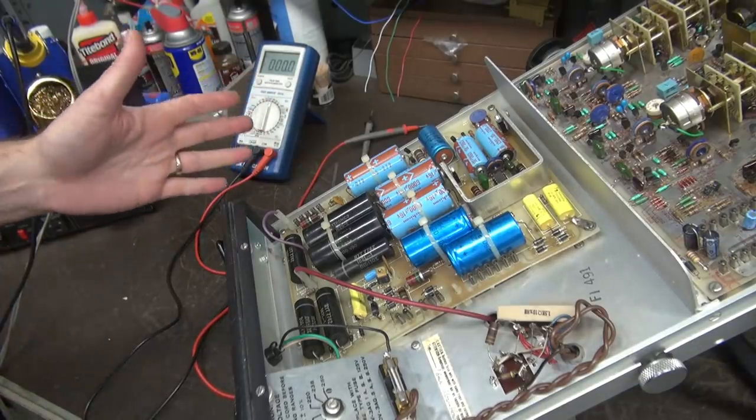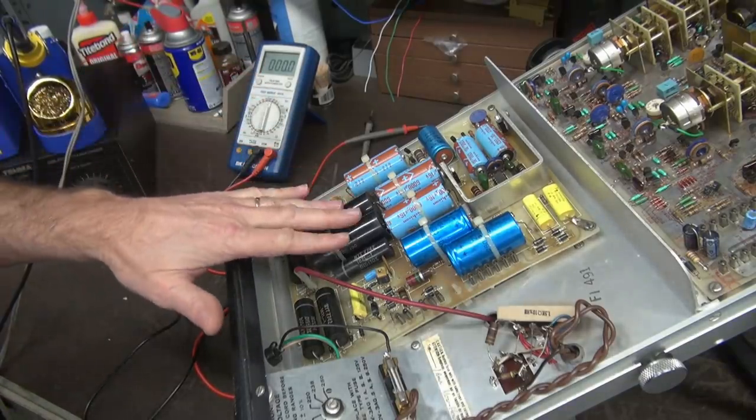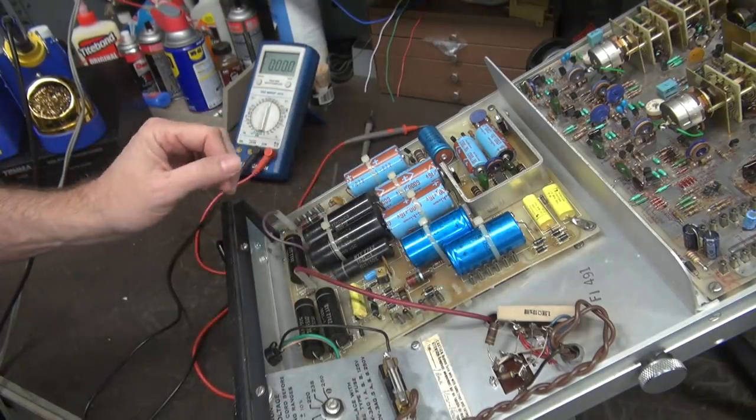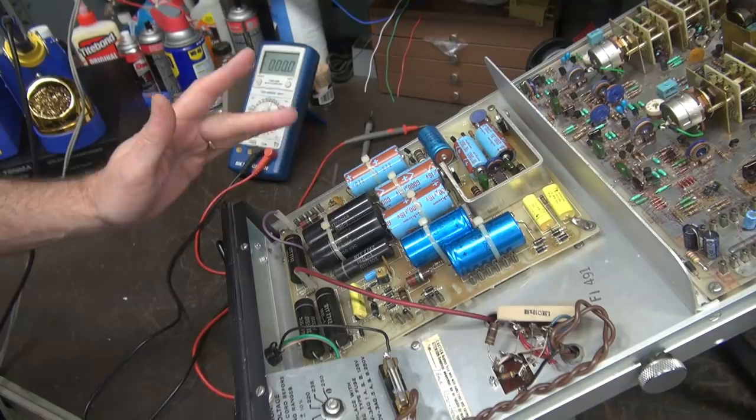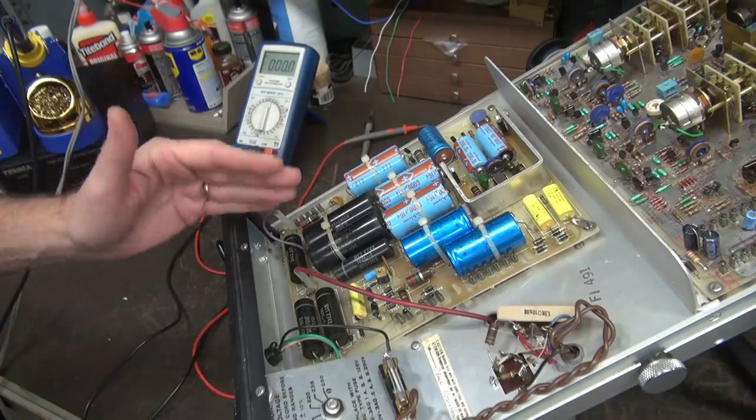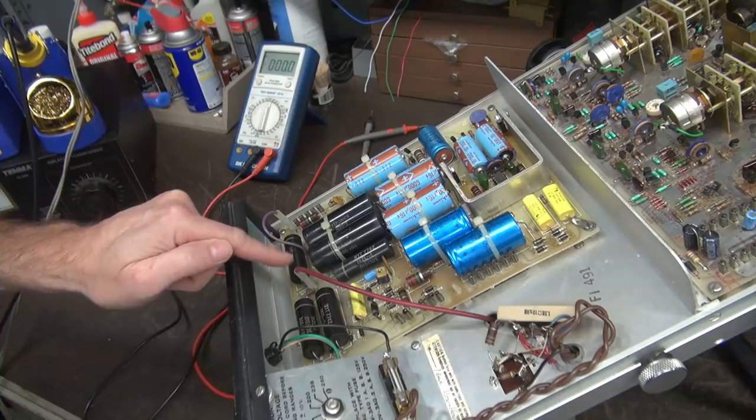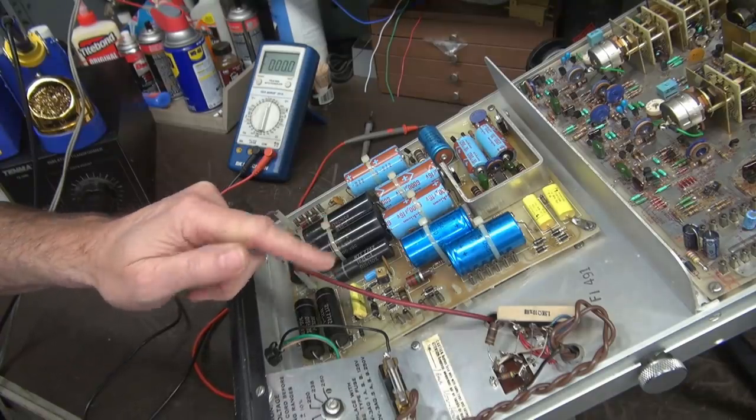So Heathkit did it right when they built these. Everything is modulized. So they actually plug in to the chassis. So before you pull the board, obviously make sure the caps are discharged. There could be up to 3,000 volts at this point where the anode is going up to the tube.